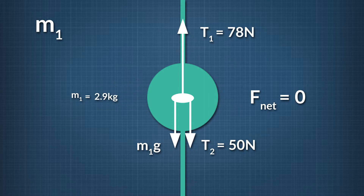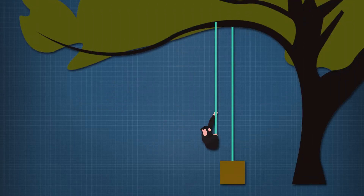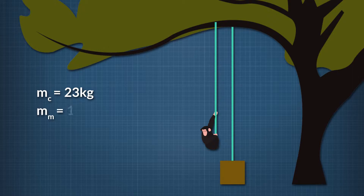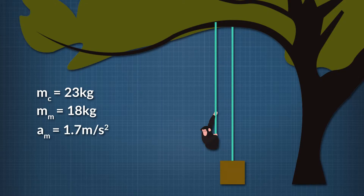Let's do another exercise of Newton's second law. A rope is hung over a frictionless tree branch. One end is tied to a 23-kilogram crate sitting on the ground, and an 18-kilogram monkey climbs up the other side. If the monkey climbs with an acceleration of 1.7 meters per second squared, how fast does the crate accelerate? What is the highest acceleration the monkey can have without lifting the crate up? Let's begin by drawing a free-body diagram of the forces acting on the monkey.